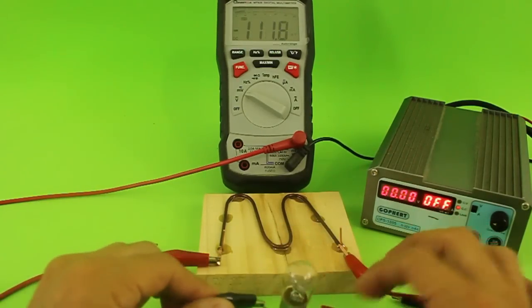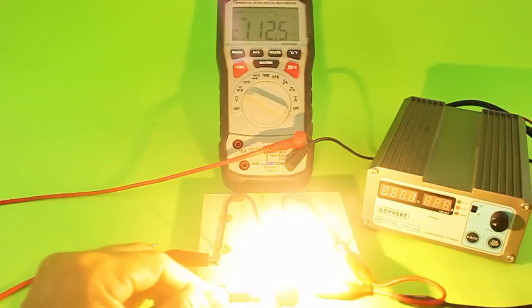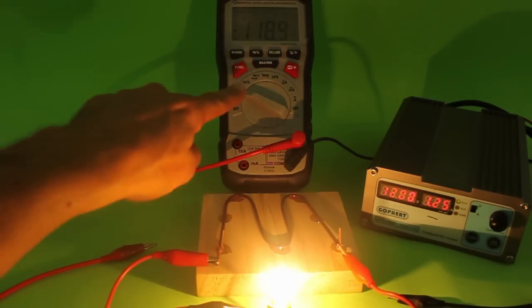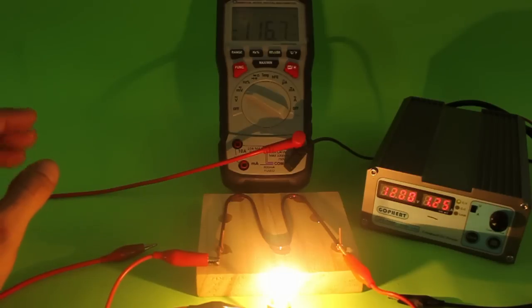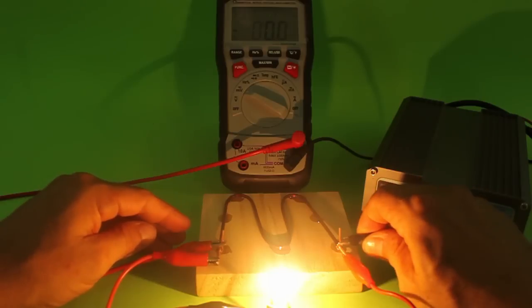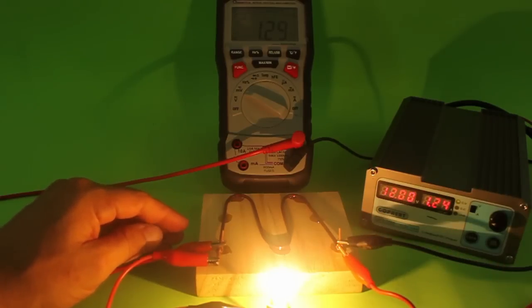Of course if I turn on the power supply the lamp goes on. And now let me connect the multimeter which is in the scale of millivolts to the shunt. And let's see the value that we get.